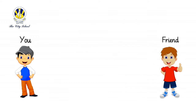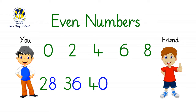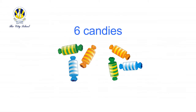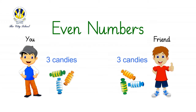Also, don't forget: zero, two, four, six, and eight are even numbers. And all the numbers ending with them, like 28, 36, 40, 52, and 64, are even numbers. We have learnt that any number of things that can be shared equally are even numbers.